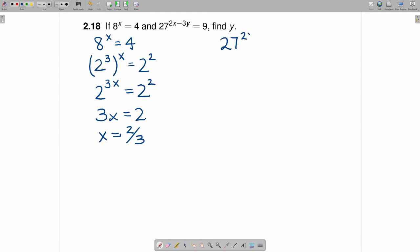So this equation is 27 to the 2x minus 3y is equal to 9. And once again, we have the same problem. We have a different base on the left-hand side than we do on the right-hand side. So recognizing that both of these are powers of 3,